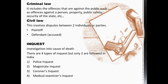Criminal Law includes offences that are against the public — for example, offences against a person, property offences, public safety crime, security of the state, etc. Examples include murder, theft, assault and so on. Civil Case involves disputes between two individuals or parties, especially personal matters under civil law. Here you need to know two terms: Plaintiff — the one who is complaining and bringing the case — and Defendant, who is the accused. In criminal law, the plaintiff will always be the state, and the defendant is the one who has committed the crime.